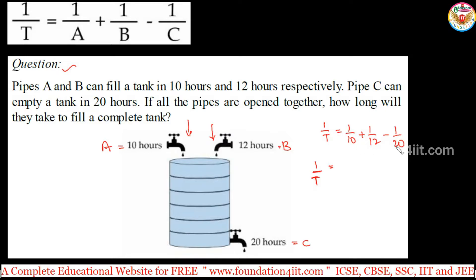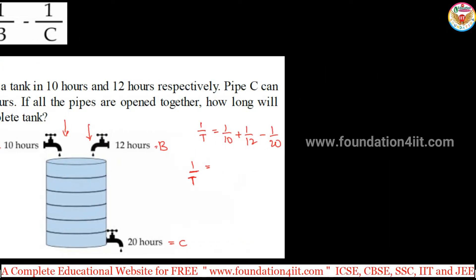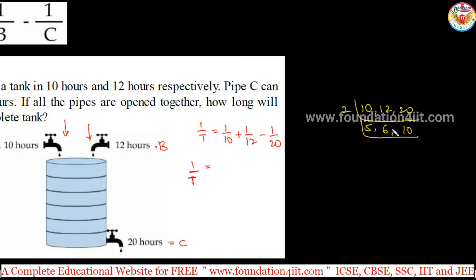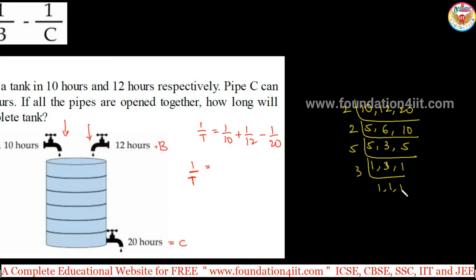Take 10, 12, 20 and find the least common multiple. I'll go directly: 10, 12, and 20. The LCM: divide by 2 to get 5, 6, 10. Again by 2 to get 5, 3, 5. Then by 5 to get 1, 3, 1. Then by 3. So 2 to the 4th is 16, times 5 is 20, times 3 is 60. The LCM is 60.